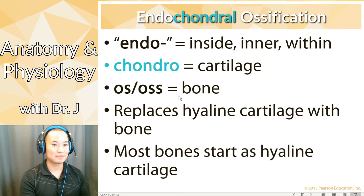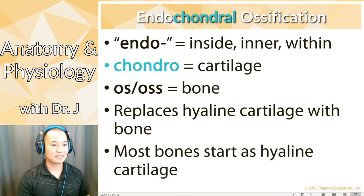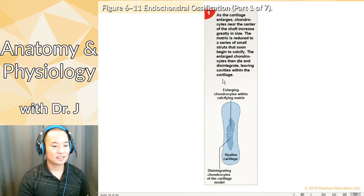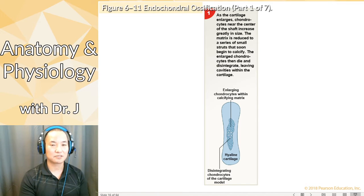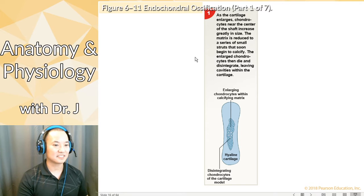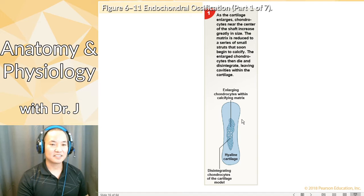Most bones start as hyaline cartilage. If it's not intramembranous, it's endochondral ossification. All those bones that weren't in the skull and clavicles start off as hyaline cartilage in the developing fetus — they don't start off as bone. Hyaline cartilage is like the foundation or scaffold that bone eventually forms within.